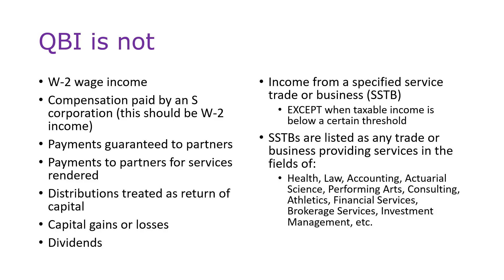Why does somebody go to a medical practice? It's because of the skill of the doctors. Why does somebody go to a law firm? It's because of the skill of the lawyers. Why does somebody go to an accounting firm? It's because of the skill of the accountants. If the human asset is the thing behind the business, then it is probably an SSTB, as opposed to something like Costco that is selling merchandise.